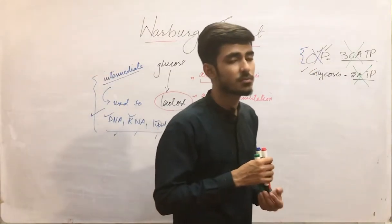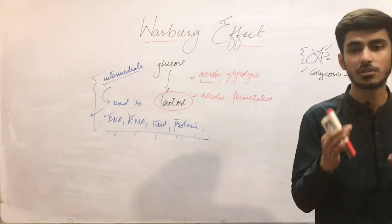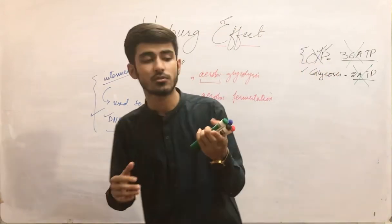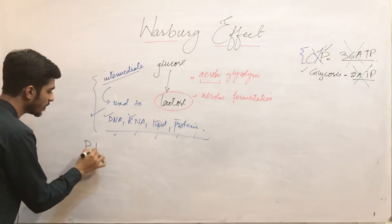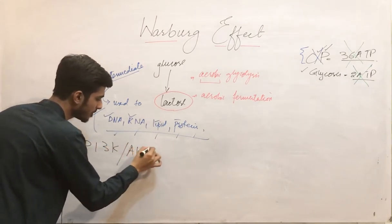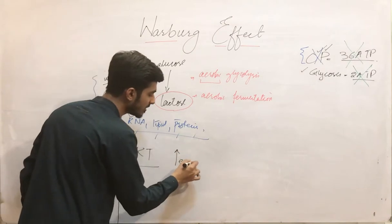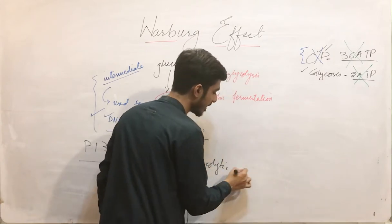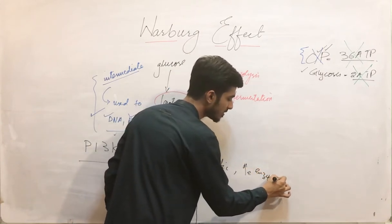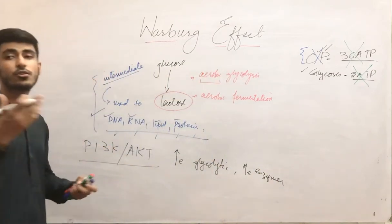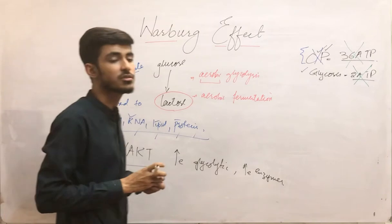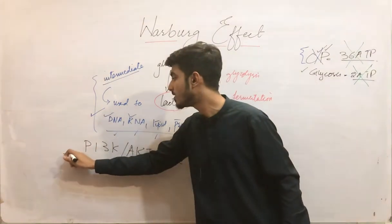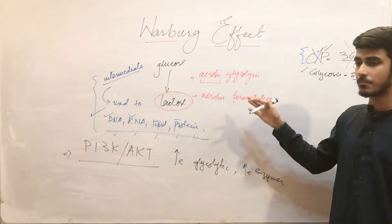In tumor cells, there are certain mutations that promote the glycolytic pathway. For example, the phosphoinositol-3-kinase (PI3K)/AKT pathway — this upregulates and increases the glycolytic pathway. It increases the enzymes for glycolysis and increases the mitochondrial intermediates that are used in the formation of cellular components such as lipids, proteins, DNA, RNA, and organelles. In this way, this helps in increasing glycolysis.